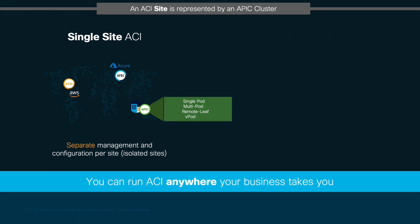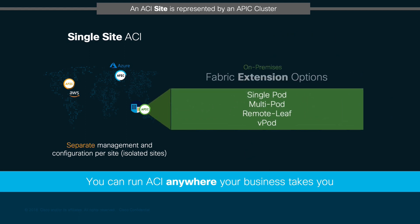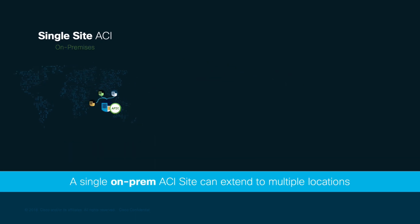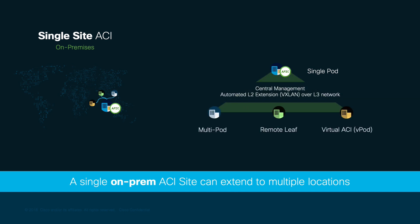Let's start our ACI Anywhere journey with the single-site fabric extension options. Throughout this learning series, we have mostly focused on a single-site, single-pod configuration for on-prem installations. However, through the same APIC or APIC cluster, we could extend centralized management and automate VXLAN connectivity to other data centers and rooms, branches, and even environments with no Nexus 9000 switches by using features like multi-pod, remote-leaf, and virtual ACI or VPOD, respectively.